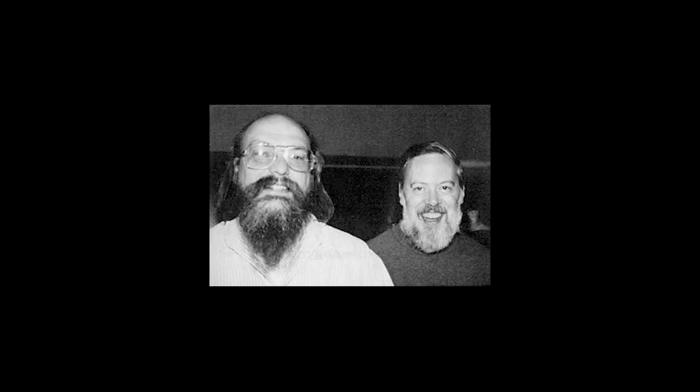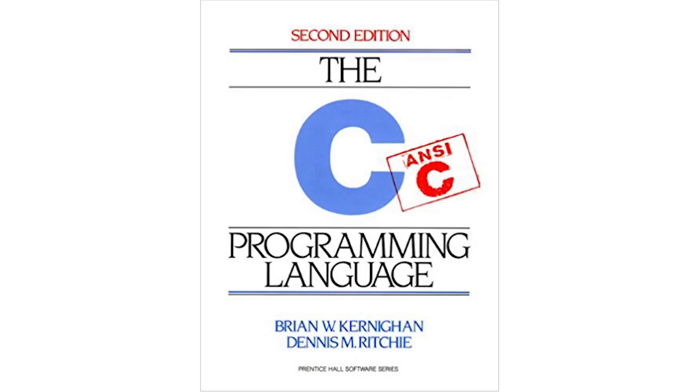Unix was invented by two men: Ken Thompson and Dennis Ritchie. Dennis Ritchie is famous for inventing the C programming language — if you have the book by Brian Kernighan and Dennis Ritchie, it's often called the KR version of C. Ken Thompson is famous not only for inventing Unix but also for inventing the UTF-8 character encoding and co-inventing Google's Go language. We're dealing with legends in computing.